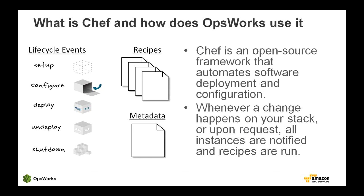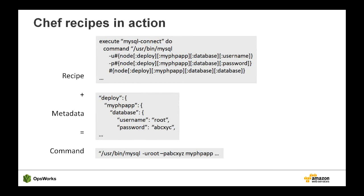Let's take a look at an example recipe. We probably need to connect to our database table for all the information our app is going to generate. We could do that by hand, but we'd like to automate it to ensure repeatability, so we write a recipe. The recipe would be brittle if we hard-coded information like the username and database names, so we define it in metadata and pass it to the recipes. Chef takes the metadata and plugs it in — for example, the deploy my PHP app database becomes root and ABCXYZ, and that gets put into the command.